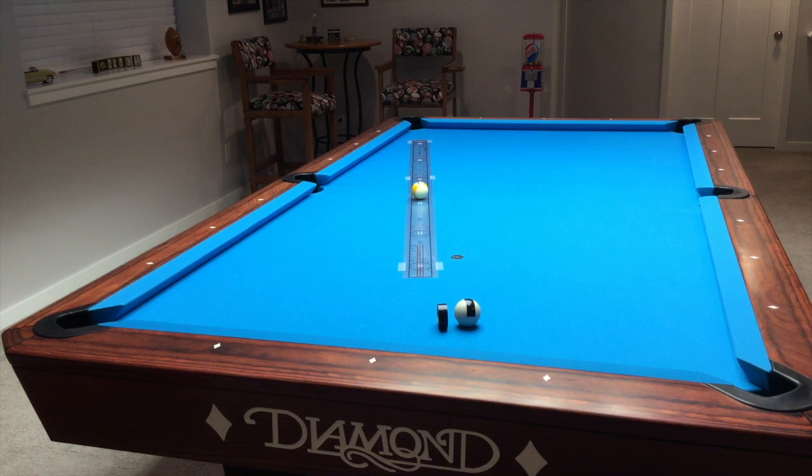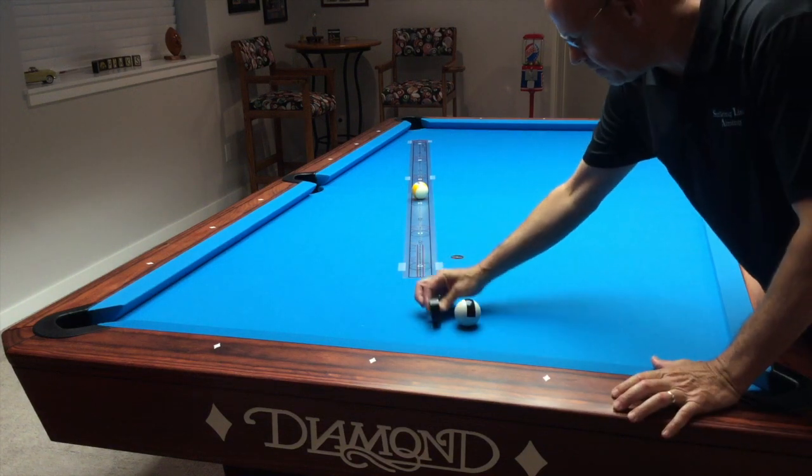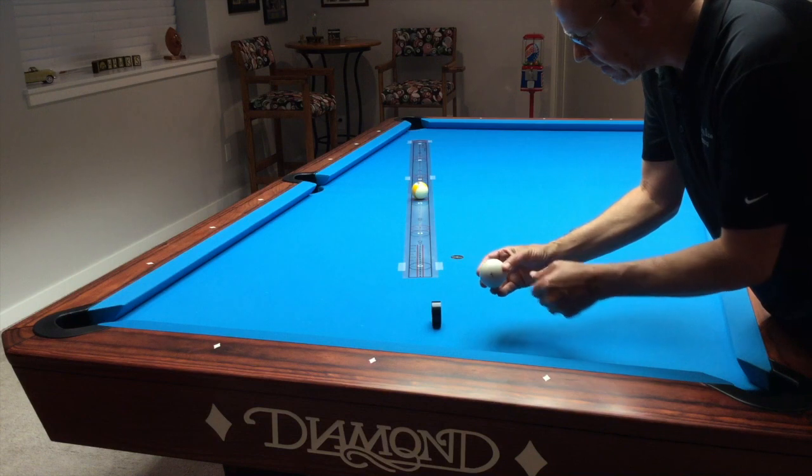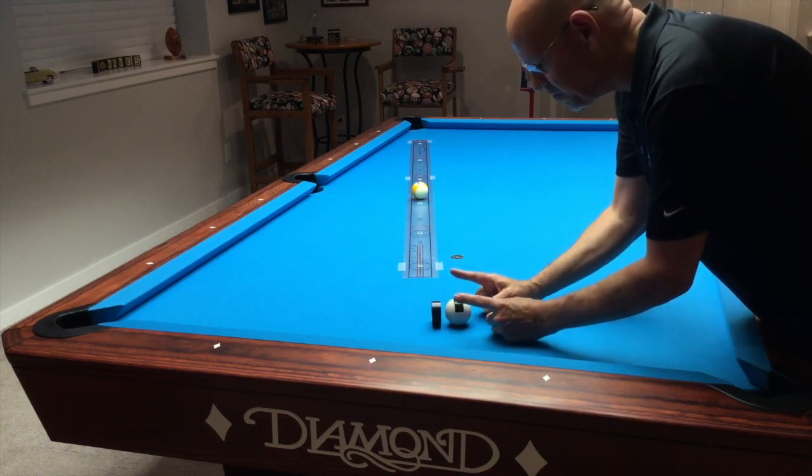So to do this, set the table up just like this into the corner pocket with the long track. Put the number nine or any other object ball on the number two position, and what you'll simply need is some electrical tape and the blue dot object ball that comes with the striking line aiming set. Cut off about two inches or so and then center it on the ball like I have there.